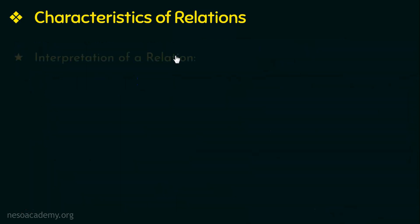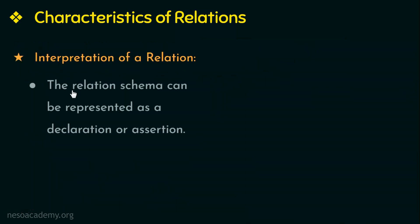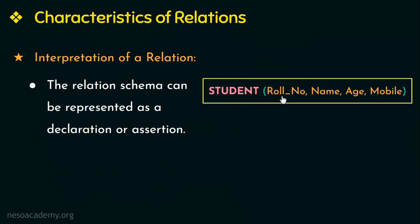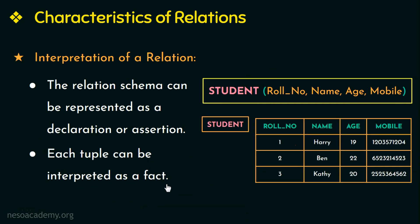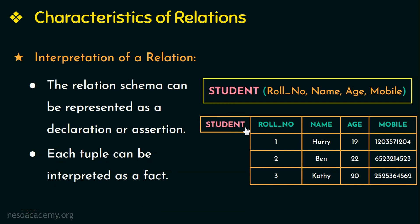The last characteristic of a relation is interpretation of a relation. The relation schema can be represented as a declaration or assertion. For example, this relation schema asserts that each student entity has a role number, name, age, and a mobile. Each tuple can be interpreted as a fact — for example, the first tuple declares the fact that there is a student named Harry whose role number is 1, age is 19, and so on. Some relations may represent facts about entities, whereas other relations may represent facts about relationships.